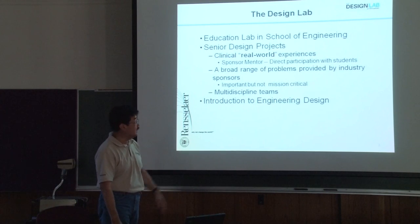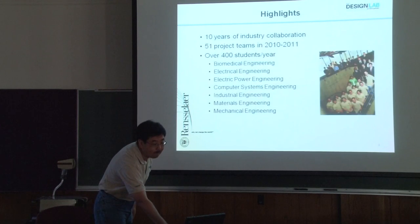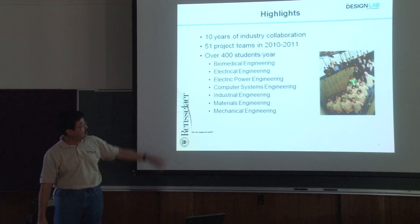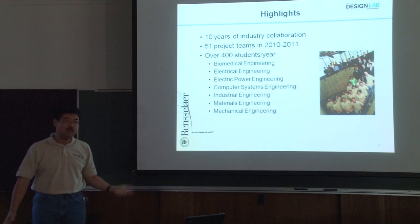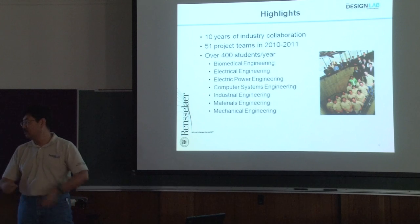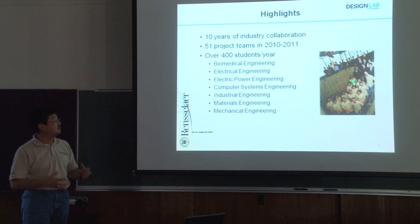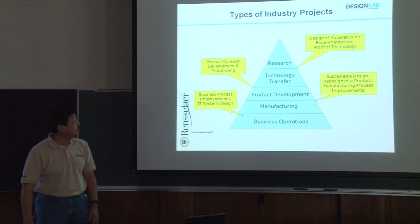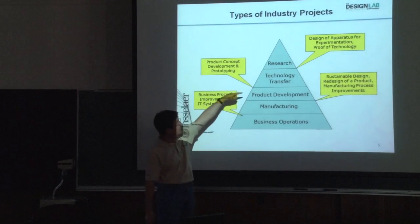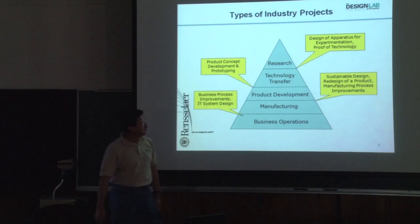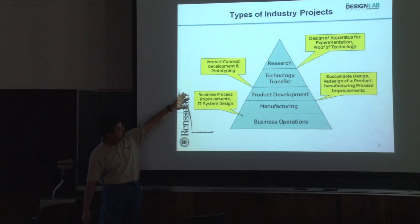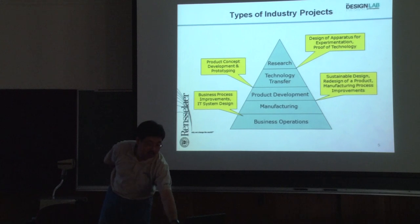Last year we celebrated our 10th anniversary. We typically support 400 students from these majors — 200 students per semester. Think of it like a consulting firm, but every semester 200 people leave and 200 new people come in — 100% turnover. That makes it really difficult to build a strong team. Sponsors ask for a variety of problems, from advanced research to proof-of-concept, software product development, and business process improvement IT-type work.